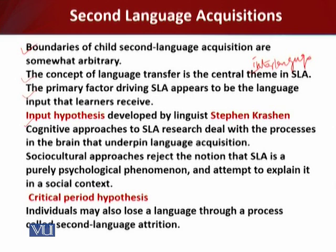However, the input hypothesis goes as far as to state that input is all that is required for acquisition. Then we have cognitive approaches to second language research, which deal with the processes in the brain that underpin language acquisition — cognition-based processes that determine how acquisition takes place in the mind. Then we have the sociocultural approach, which rejects the notion that second language acquisition is a purely psychological phenomenon and attempts to explain it in a social context, taking into account the social context in which the second language is used.